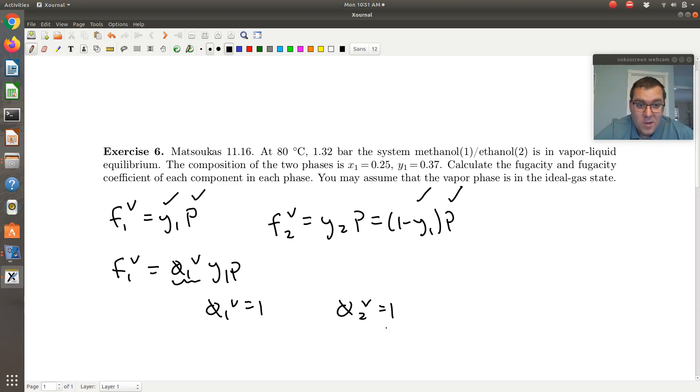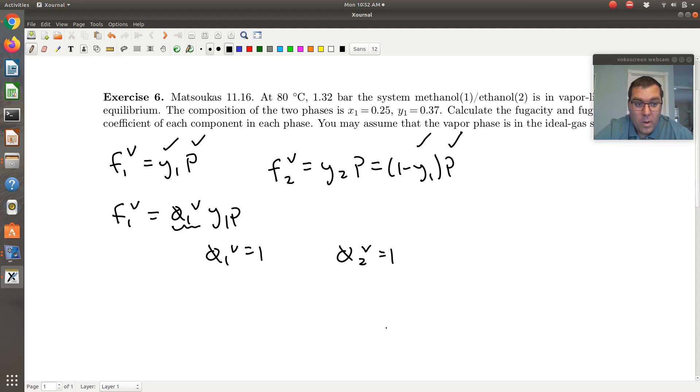Alright, so then next, what about the liquid phase fugacity and the fugacity coefficient of each component in the liquid phase? Well, since I have two phases at coexistence, I can write an isofugacity coefficient for each component, and that would tell me that F1L is just equal to F1V. I just calculated F1V, so I have F1L.